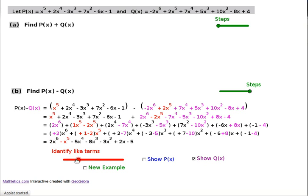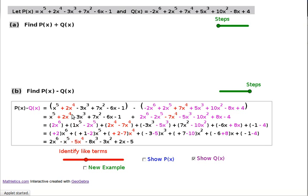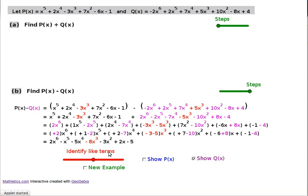For the x to the 5th terms, you've got plus 1 and minus 2, gives you minus 1. Plus 2 and negative 7 gives you minus 5. Minus 3 and minus 5 gives you minus 8.